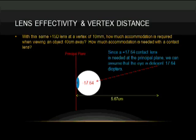With the same fifteen diopter lens at a vertex of ten millimeters, how much accommodation is required when viewing an object forty centimeters away? And how much accommodation is needed with the corresponding contact lens? Since you require a plus 17.64 contact lens at the principal plane of the eye, we can assume that the eye is deficient by 17.64 diopters.